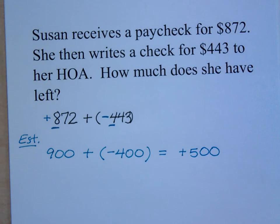So if Susan is trying to figure out about how much money she has left, and she's using front-end rounding, she might say she has about $500 left. Now rounding is good to a point. Let's see what it is exactly.